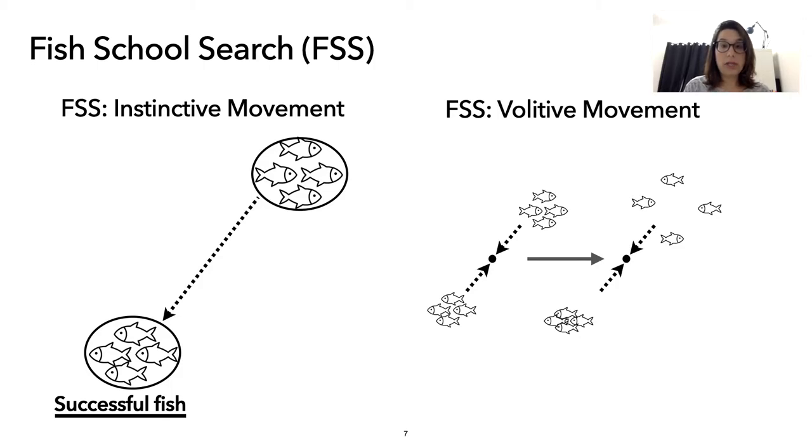So that when the swarm expands, it means that they are trying to look at other regions, new regions. When they contract, it means that they are trying to look at a specific region in a more detailed manner.